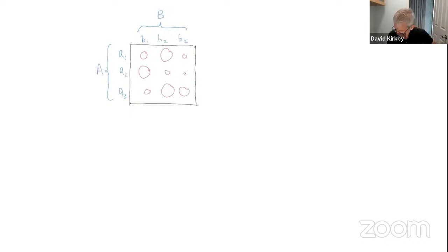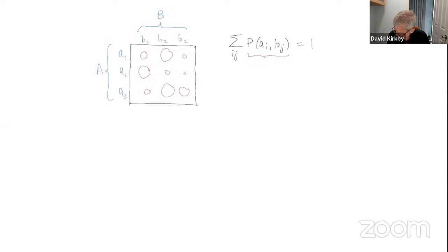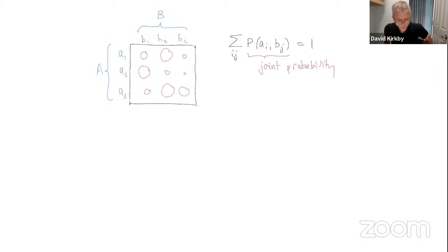What we were looking at before was a matrix of probabilities where the area of each circle represents a different probability. Let's move to more abstract notation. Suppose the thing measured over here we call feature A, with possible values a1, a2, a3. Over here we have feature B, with values b1, b2, b3. The area of each red circle is a joint probability, and those sum to one.